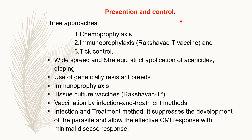For prevention and control, three approaches are required. First is chemoprophylaxis — the use of certain chemicals to protect healthy animals or to protect animals from severe infection, using the drugs already discussed in treatment. Second, which is very important nowadays, is immunoprophylaxis — there is Raksha VAC-T vaccine, which is highly effective. Third is tick control through widespread and strategic strict application of acaricides and dipping.